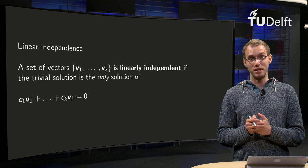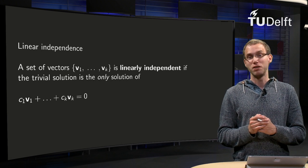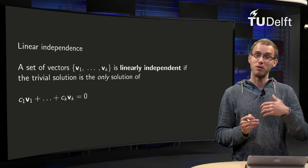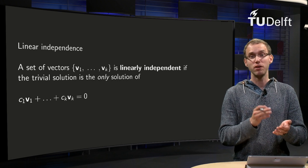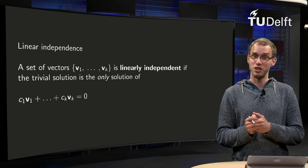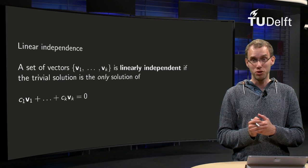You know linear independence for vectors in Rn. A set of vectors in Rn is independent if and only if the equation c1v1 plus up to ckvk equals zero only has the trivial solution.